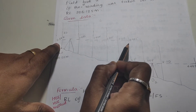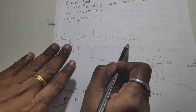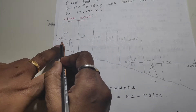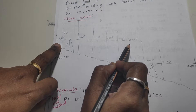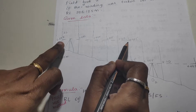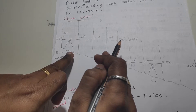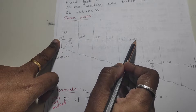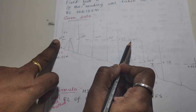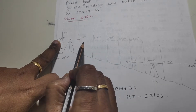The first reading should be entered in the backside and the last reading should be in the foresight. That's why we have to enter the intermediate side in between. So 0.385 will be your backside, 4.685 will be in your foresight, and the remaining readings you have to enter as intermediate side.